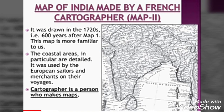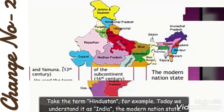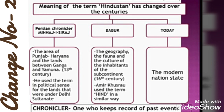Now let us discuss the second change, which is related to terminology. Take the term Hindustan, for example. Today we understand it as India, the modern nation state. But in the past, different terms were used by different people at different times. One famous Persian chronicler, Minhaj-i-Siraj, used the term Hindustan to refer to the area of Punjab, Haryana, and the lands between the Ganga and Yamuna. He used the term in a political sense for the lands that were under the Delhi Sultanate.